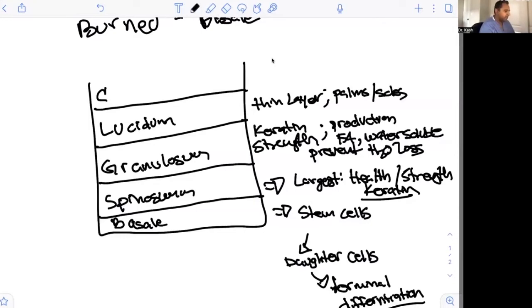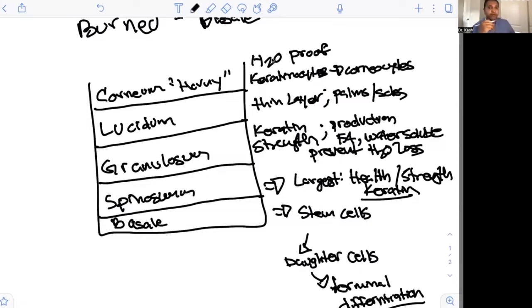And then the most superficial layer is the corneum layer, also known as the horny layer. This layer is going to allow for various things. This is where this layer is waterproof, because you obviously don't want to lose water or nutrition or that hydration in your skin. Therefore, the corneum layer is going to help with that. This is where keratinocytes become corneocytes. Once again, I talk about the life of a keratin in much more detail in my other lectures that you can find on YouTube.